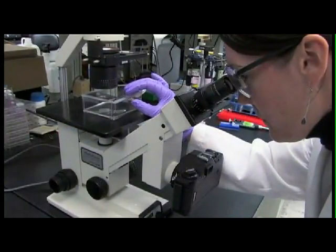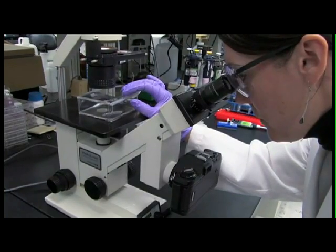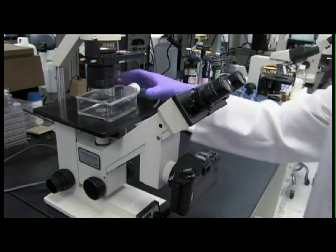Use a microscope to confirm the cells have released from the flask. They will start to appear round as they release from the substrate and will move or slide when the flask is tilted.